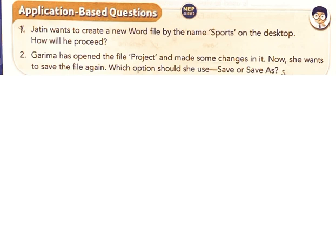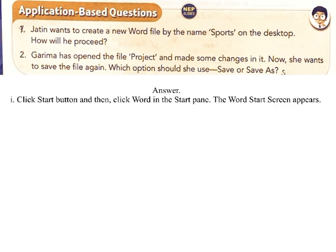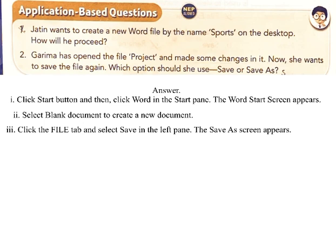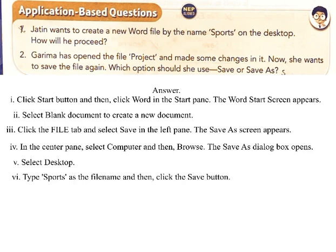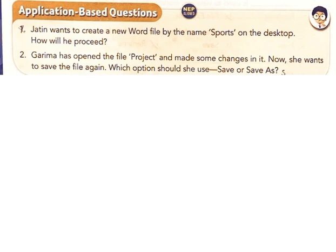Application-Based Questions. 1. Jayton wants to create a new Word file named 'Sports' on the desktop. How will you proceed? Answer: i) Click the Start button and then click Word in the Start pane; the Word start screen appears. ii) Select Blank Document to create a new document. iii) Click the File tab and select Save; the Save As screen appears. iv) In the center pane, select Computer and then Browse; the Save As dialog box opens.